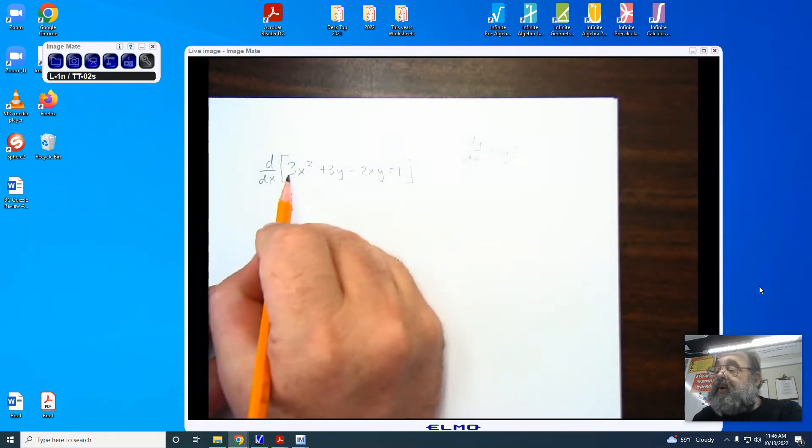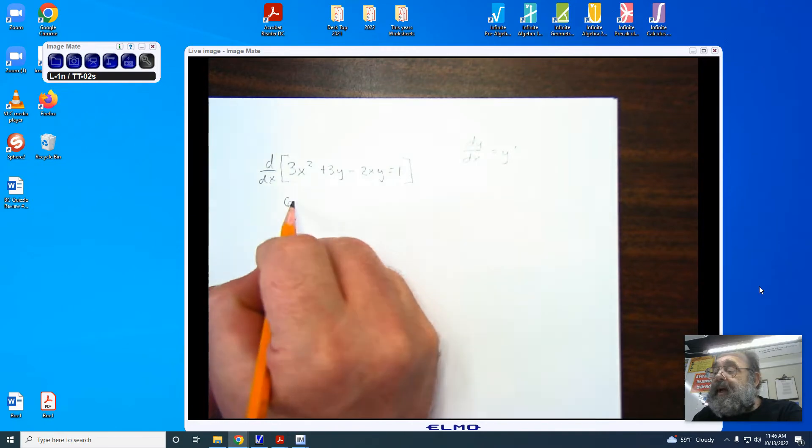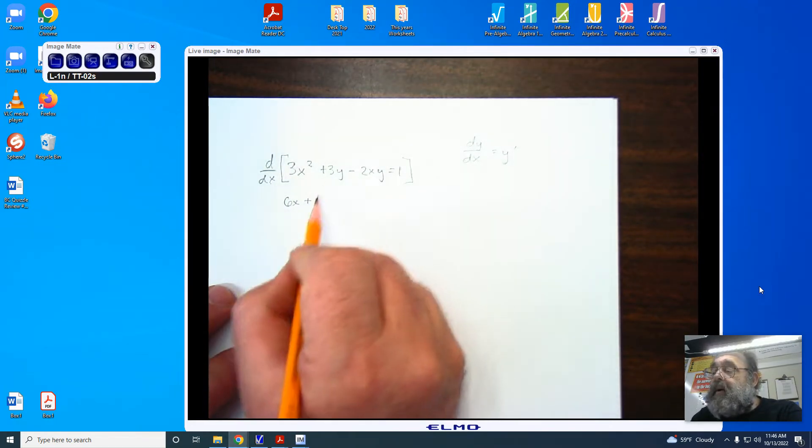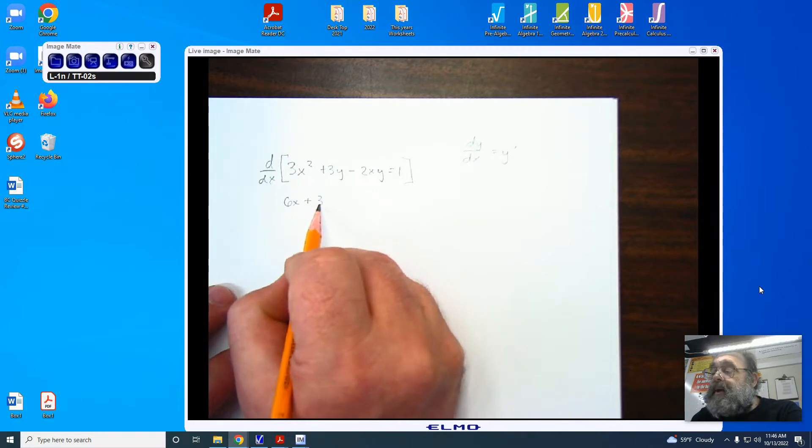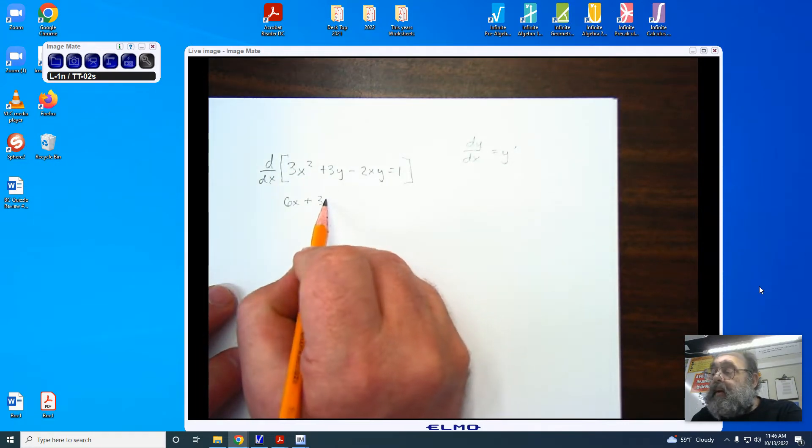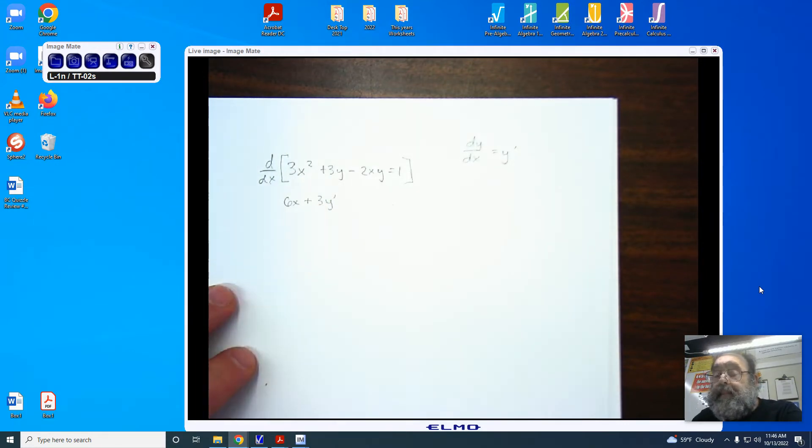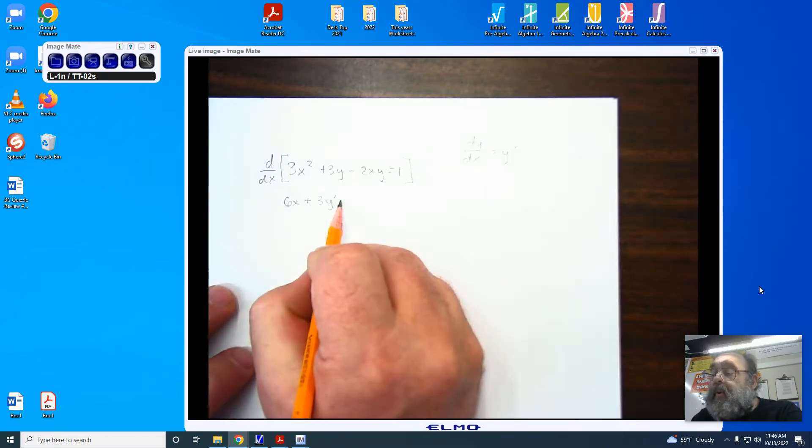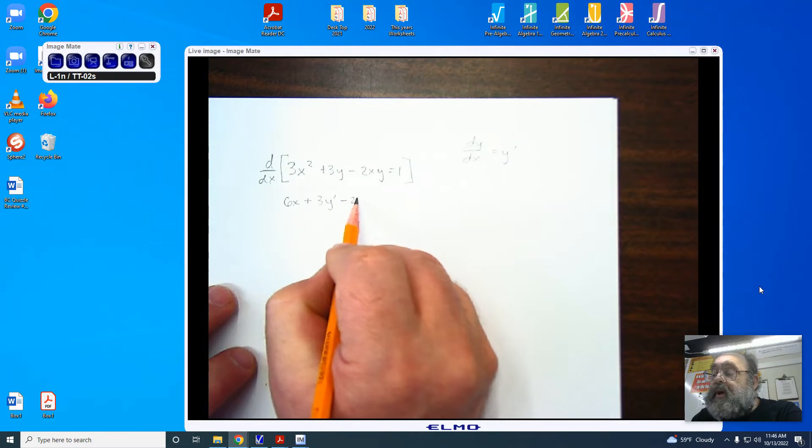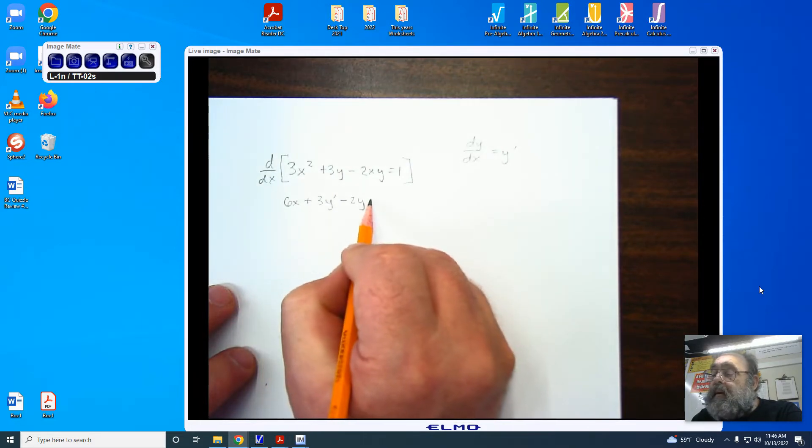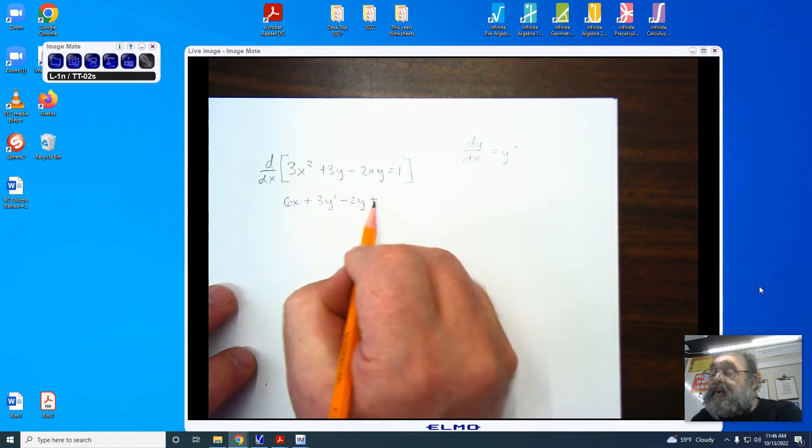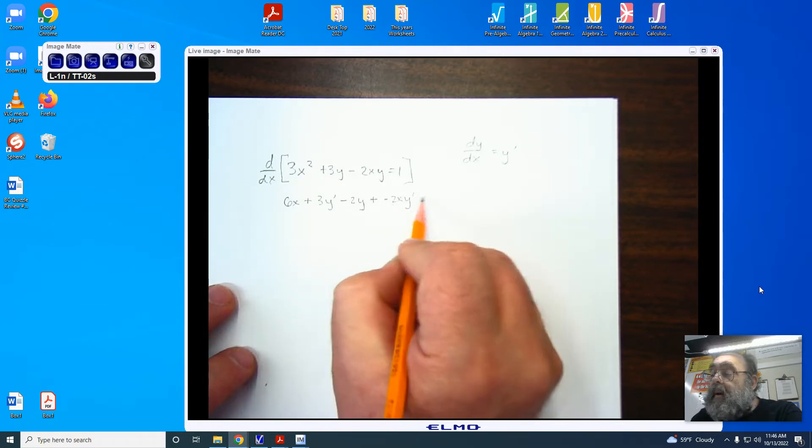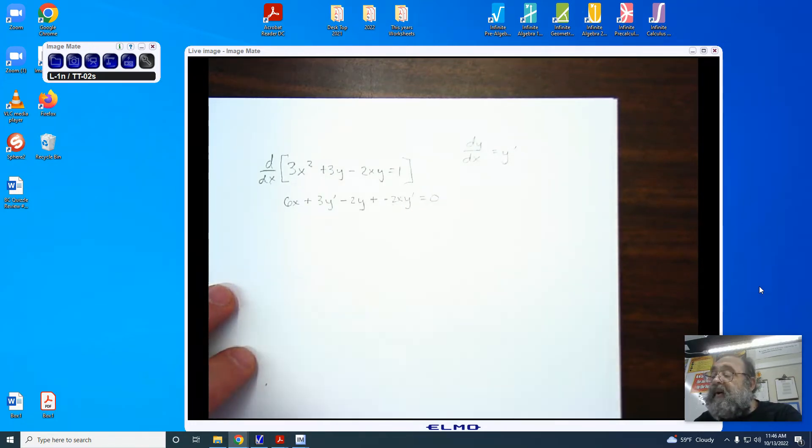Let's take a look. We start with the derivative of x normally, 6x to the first. But when we take the derivative of 3y, we're looking at 3 times the derivative of y, which we call y prime. In the next piece, we're going to have to use the product rule. Negative 2 times 1 times y, plus negative 2 times x, y prime. And our derivative of 1 is 0.